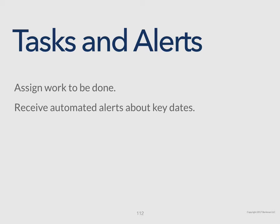You need to make sure that your organization stays in compliance with the contract and that you're monitoring the compliance of the other party to make sure you're getting the full benefit of the contract as well. Being able to schedule and set tasks and receive automated alerts is a critical part of a contract management system.